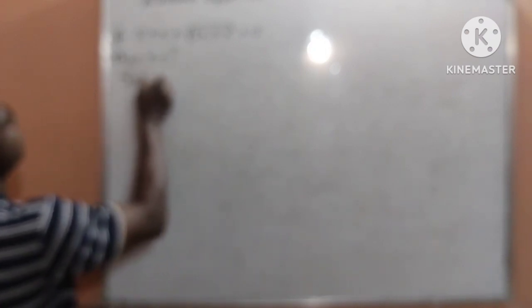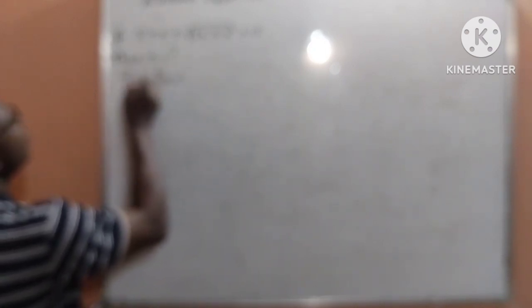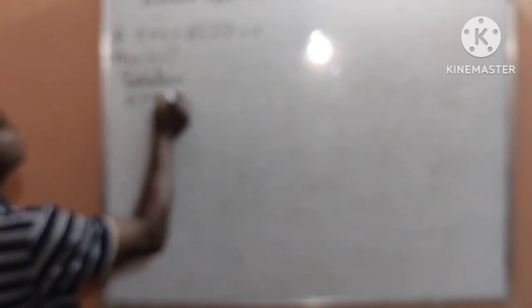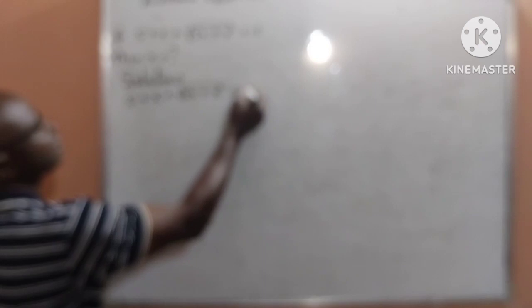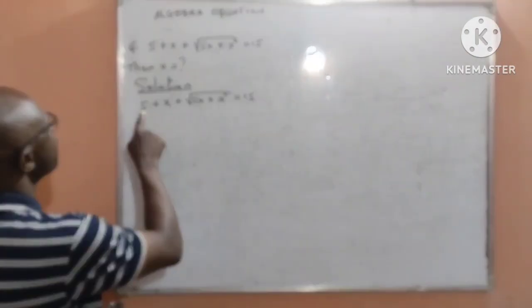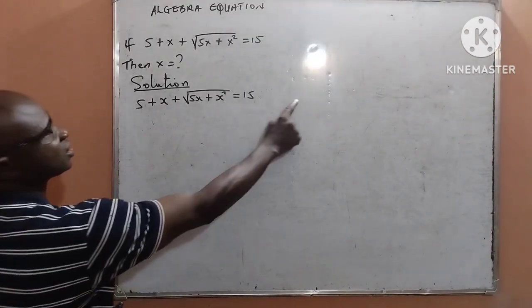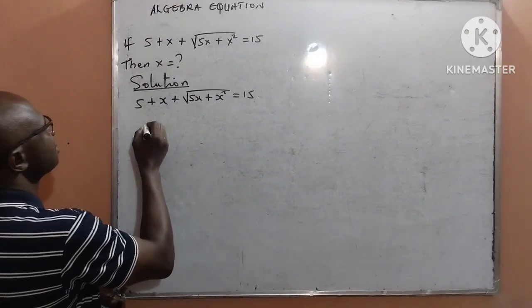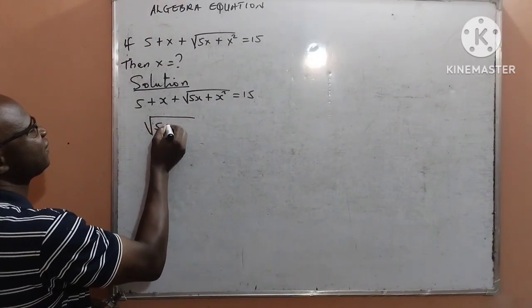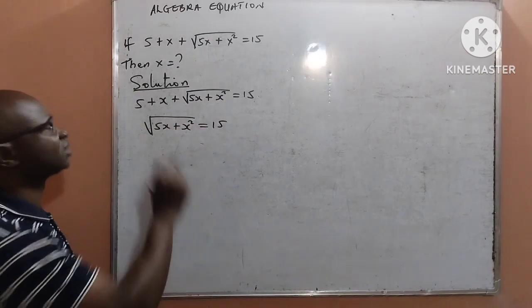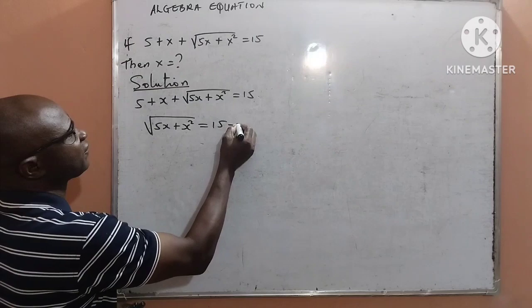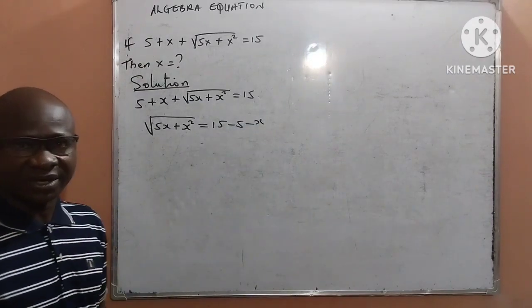Solution: the given question is 5 plus x plus square root of 5x plus x squared equal to 15. The first step, I will move 5 plus x to the right hand side, so that I will have square root of 5x plus x squared equal to 15 minus 5 minus x.